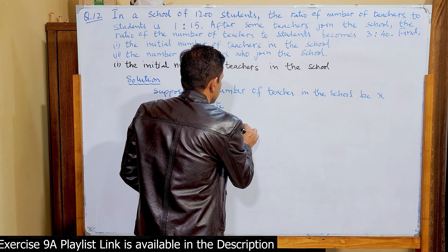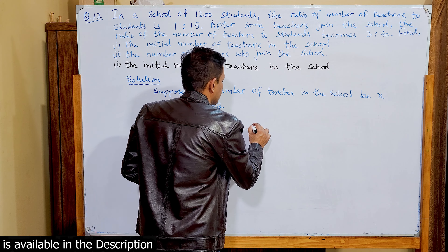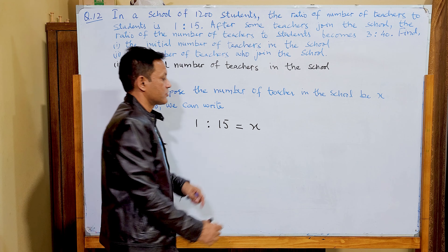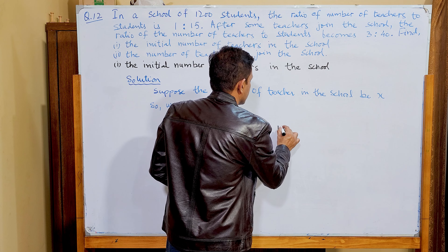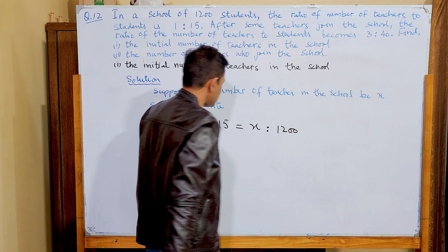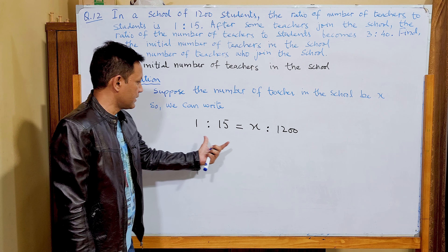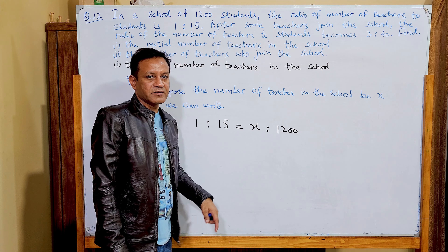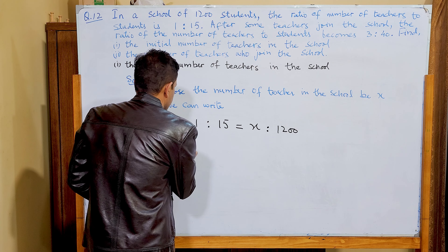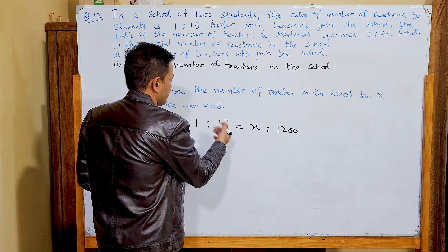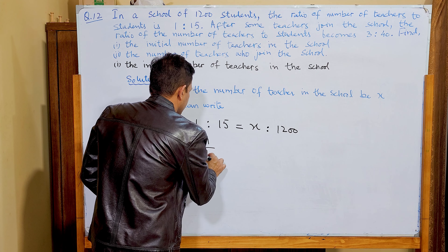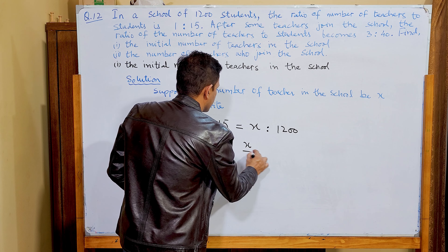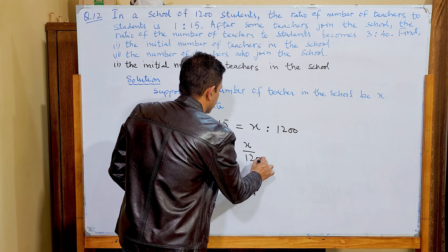We need to find the equivalent fraction. We suppose the number of teachers is x. Within the ratio 1:15, the students are equal to 1200. So we write this as an equivalent fraction: 1/15 = x/1200.